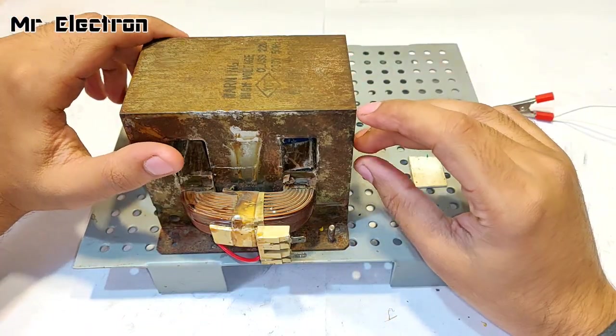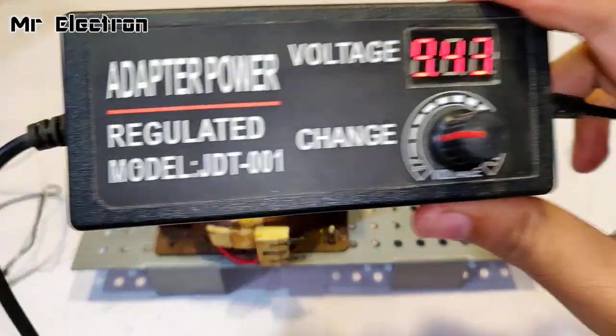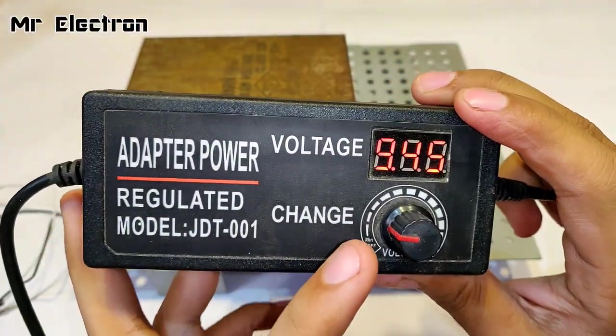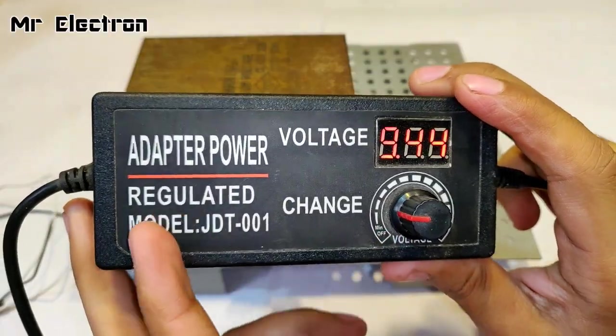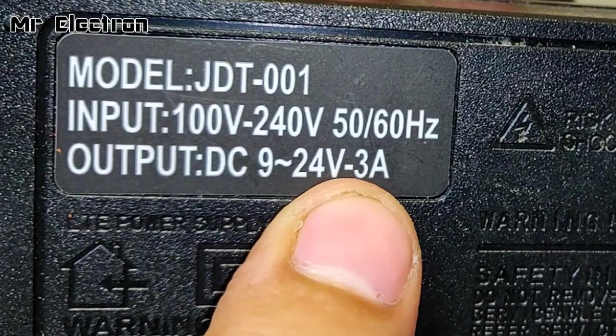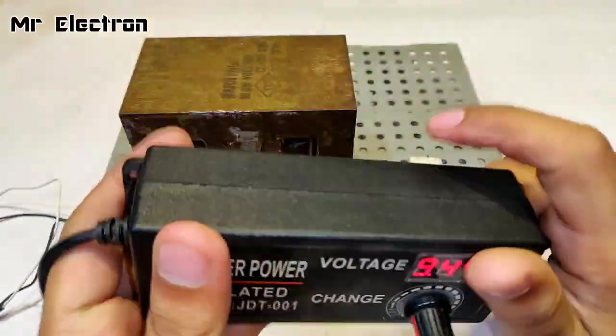So guys, this is a 24 volts variable power supply DC voltage adapter. At the back of it you can see output DC 9 volts to 24 volts at 3 amperes, input voltage 100 to 240, 50 to 60 Hertz. I'm going to use this power supply to show you one effect of this microwave transformer with a DC input source.